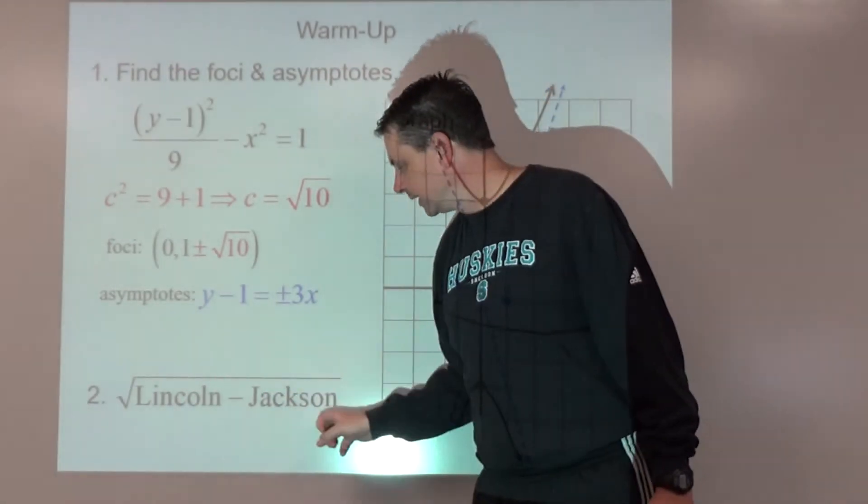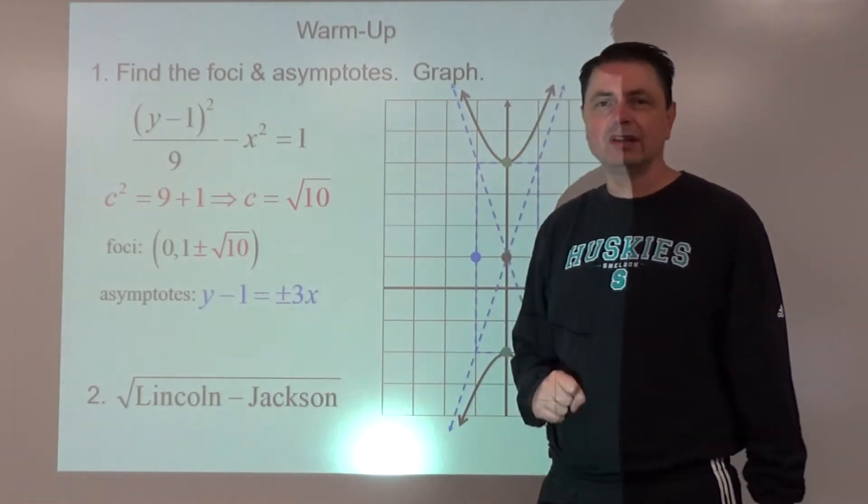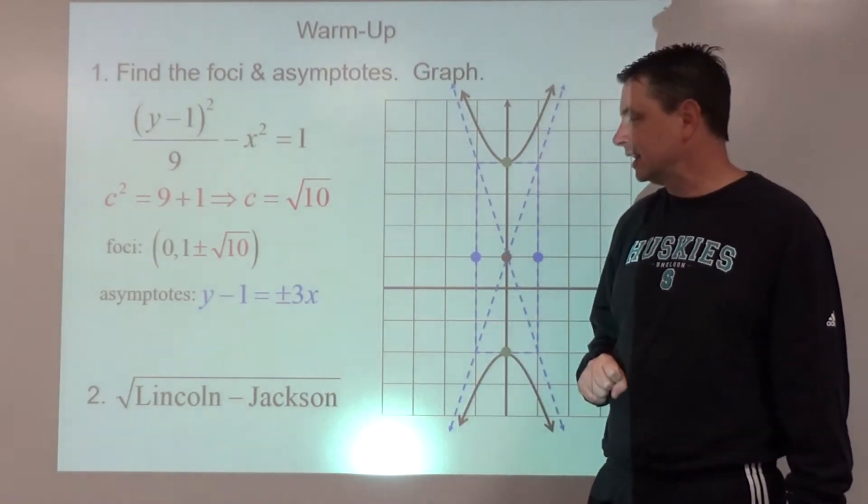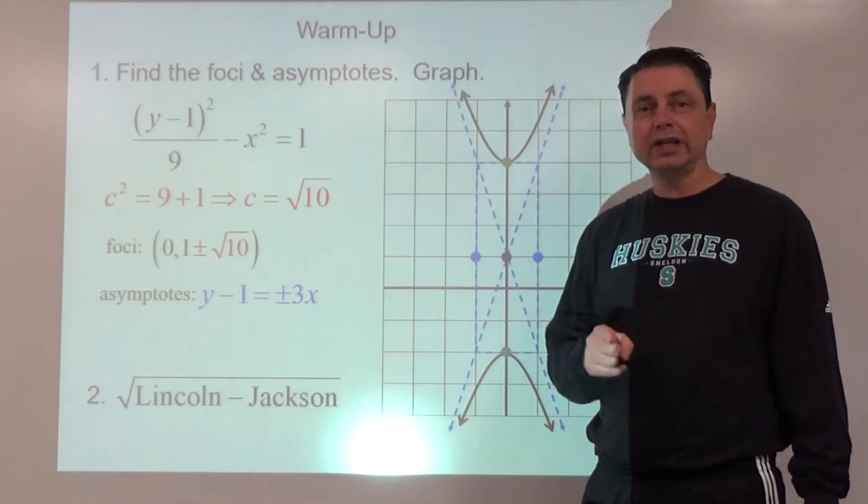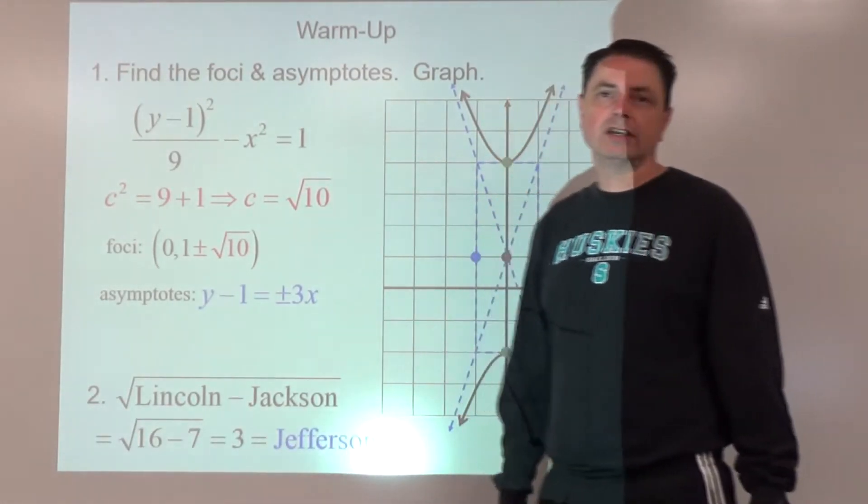Number 2, the square root of Lincoln minus Jackson. Lincoln was the 16th president, Jackson was the 7th, so 16 - 7 = 9. The square root of 9 is 3. So we're talking about presidents. The third president is Jefferson. Jefferson is the answer.